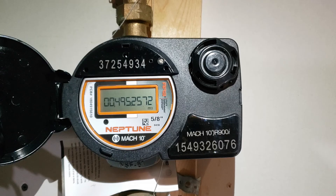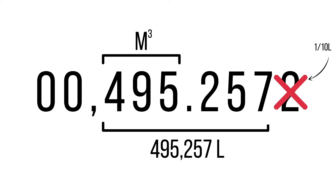When looking at the nine-digit meter reading, the three digits before the decimal are cubic meters and the three digits after the decimal are liters. You can ignore the last digit as it represents one tenth of a liter. If you remove the decimal and look at the whole number without the last digit, this is the number of liters that have flowed through the meter since it was installed in the home.